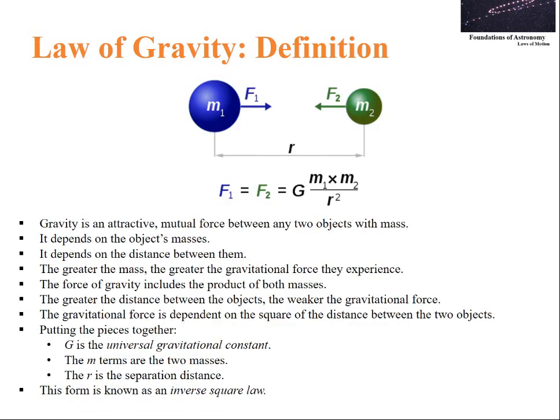Now let us go through some definitions for law of gravity. Gravity is an attractive mutual force between any two objects with mass. It depends on object's masses as well as on the distance between them. Greater the mass, greater the gravitational force. The force of gravity includes the product of both masses. The greater the distance, the weaker the gravitational force. The gravitational force depends on the square of the distance between the two objects. Putting these pieces together, F equals G times m times M by r squared, where G is the universal gravitational constant, m and M are two masses, r is the separation distance between them, and this form is known as inverse square law.